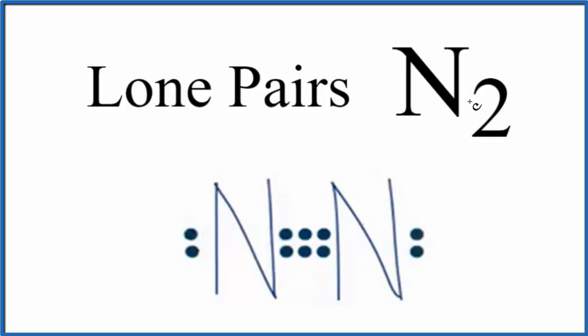So N2, the number of lone pairs. Lone pairs are electrons that aren't involved in chemical bonds. So right here and right here, we have a lone pair here and here. So we have two lone pairs around the N2 Lewis structure. You really need to draw the Lewis structure starting out to figure out the number of lone pairs.